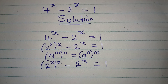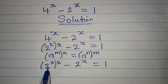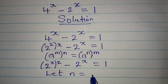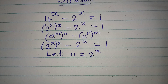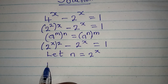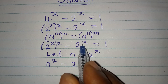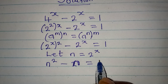Now, do you know that I can replace 2 to the power of x with a letter, knowing that we have 2 to the power of x in two places? So let n be equal to 2 to the power of x. In this case, I will now have n squared minus 2, okay, minus another n.